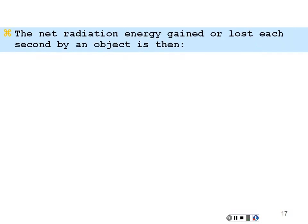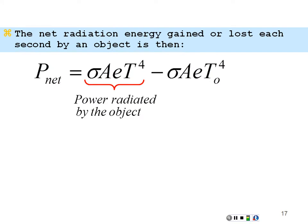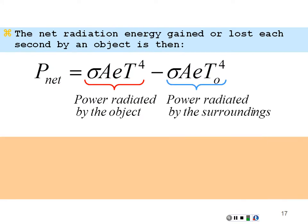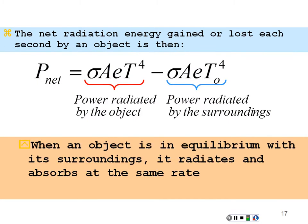The net radiation would be the energy gained or lost each second by an object would be how much it emits minus how much it absorbs. So it would be by Stefan's law sigma A emissivity temperature to the fourth of the object minus whatever it's absorbing, whatever is coming in, which would be sigma A emissivity temperature of the surroundings to the fourth power. So power radiated by the object minus the power radiated by the surroundings into the object. That would be your net power exchange. When an object's in equilibrium with its surroundings it radiates and absorbs at the same rate and at the same temperature so its temperature will not change. It will maintain the same temperature so no net exchange.